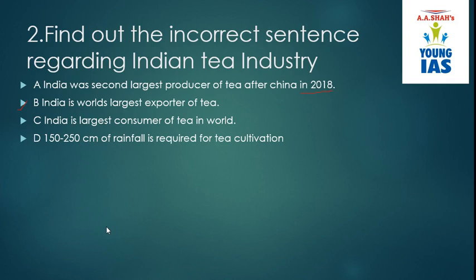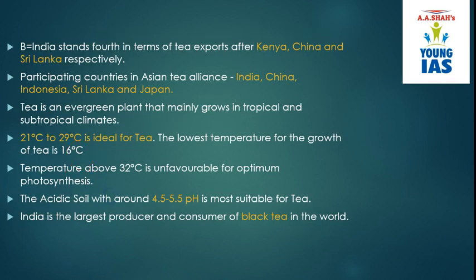150 to 250 cm of rainfall is required for tea cultivation — correct. So the correct option will be B because we are asked for the incorrect statement. Kenya, China and Sri Lanka lead in exporting tea. India, China, Indonesia, Sri Lanka and Japan are the member countries of the Asian Tea Alliance. Tea is an evergreen plant that mainly grows in tropical and subtropical climates. The ideal temperature range is 16 to 32 degrees Celsius. India is the largest producer and consumer of black tea as well.